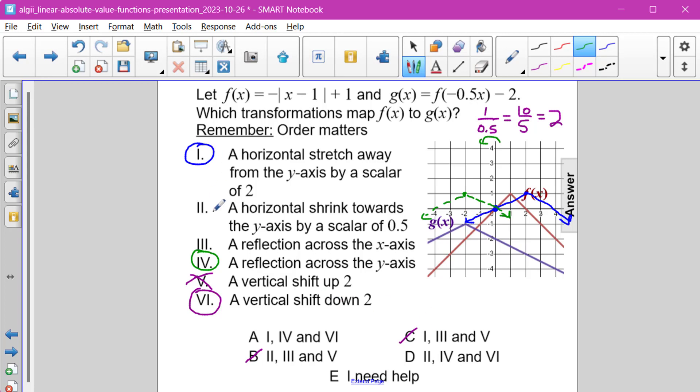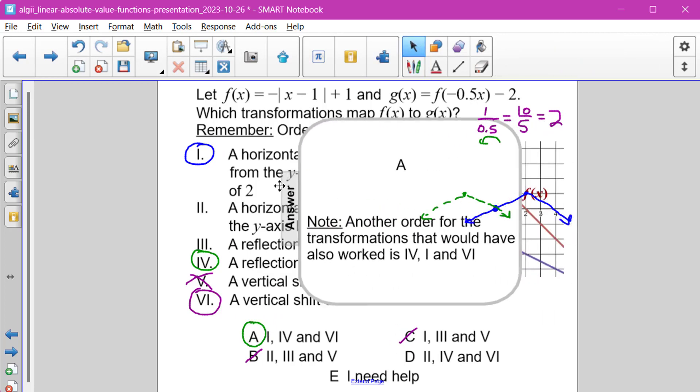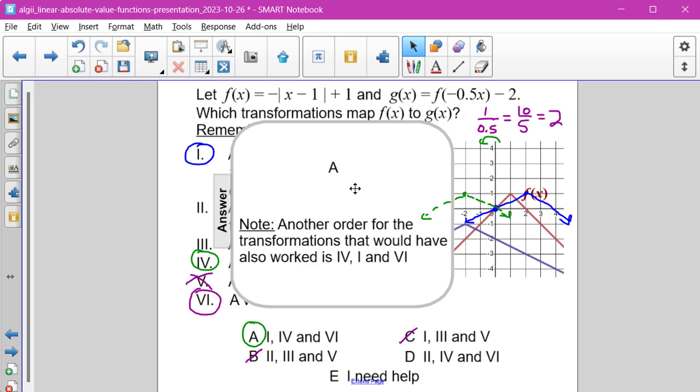That means the correct answer here is 1, 4, and then 6, answer choice A. It is also worth noting that another order for the transformations that would have also worked would have been to switch Roman numerals 1 and 4 around. However, since that was not an answer choice, there was no other answer choice that would have worked.